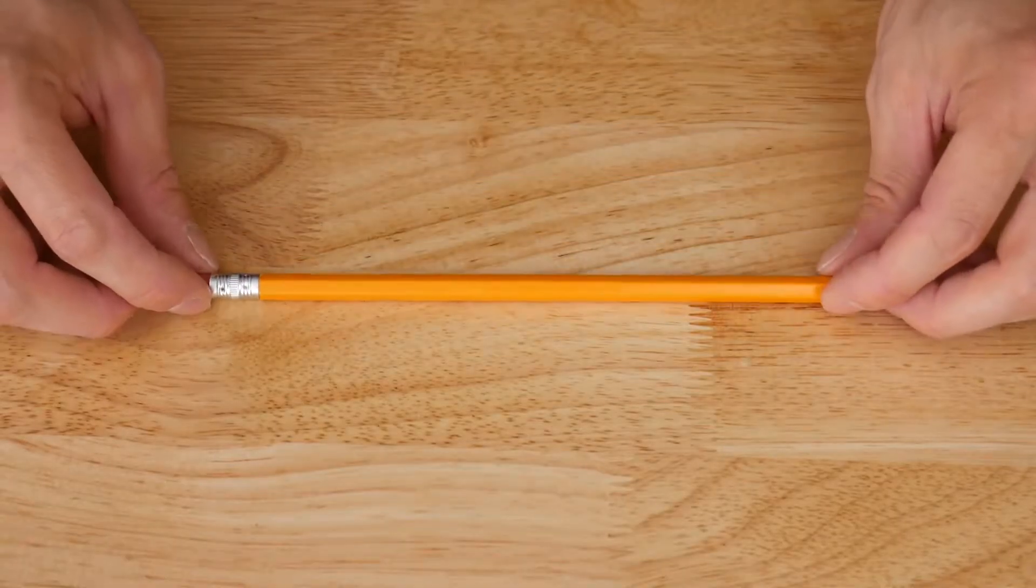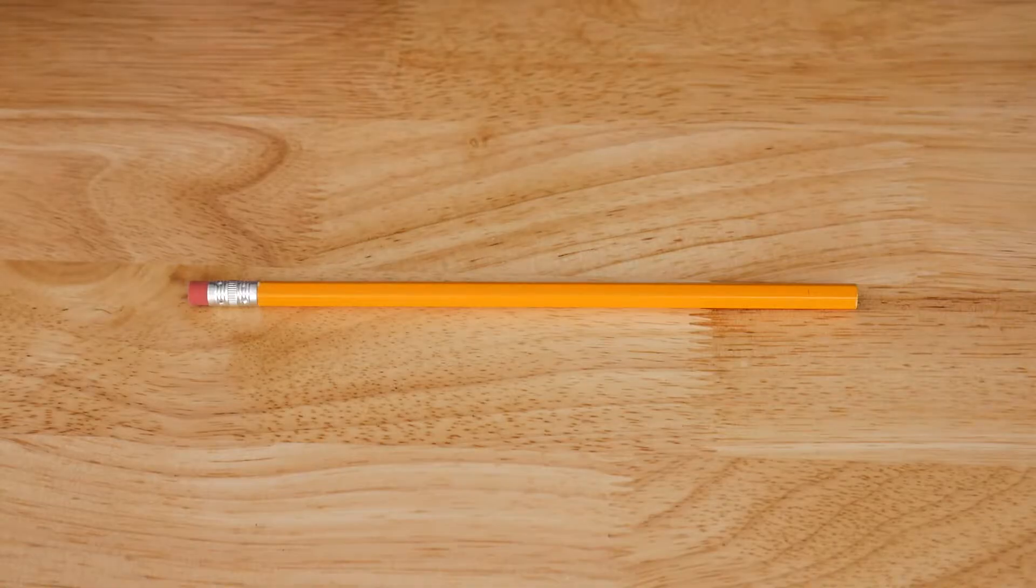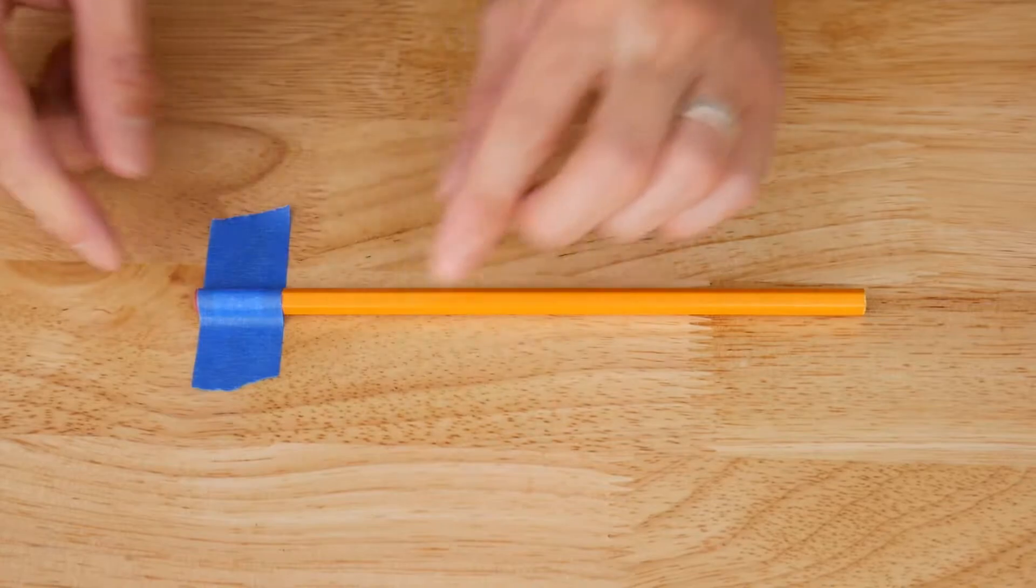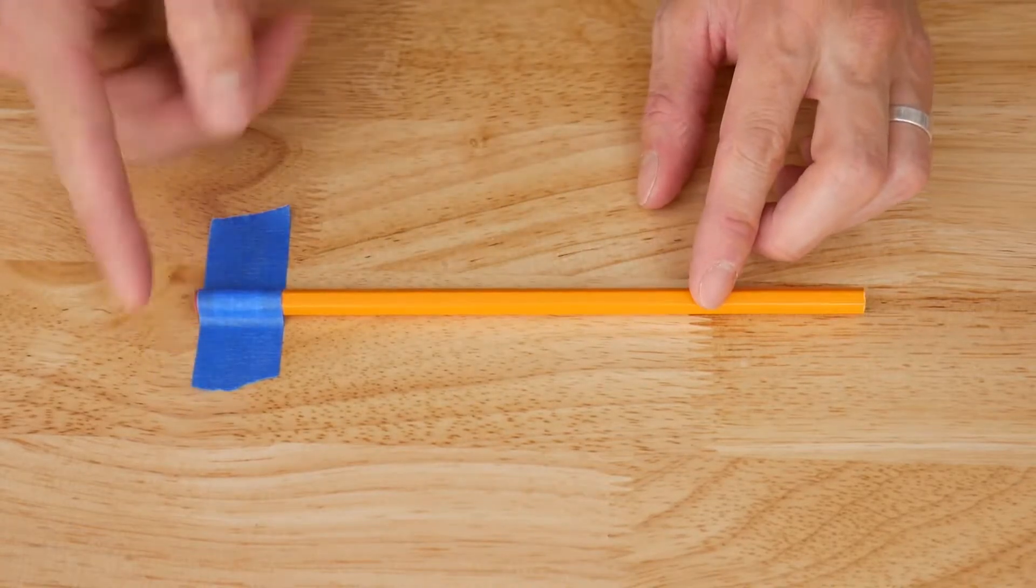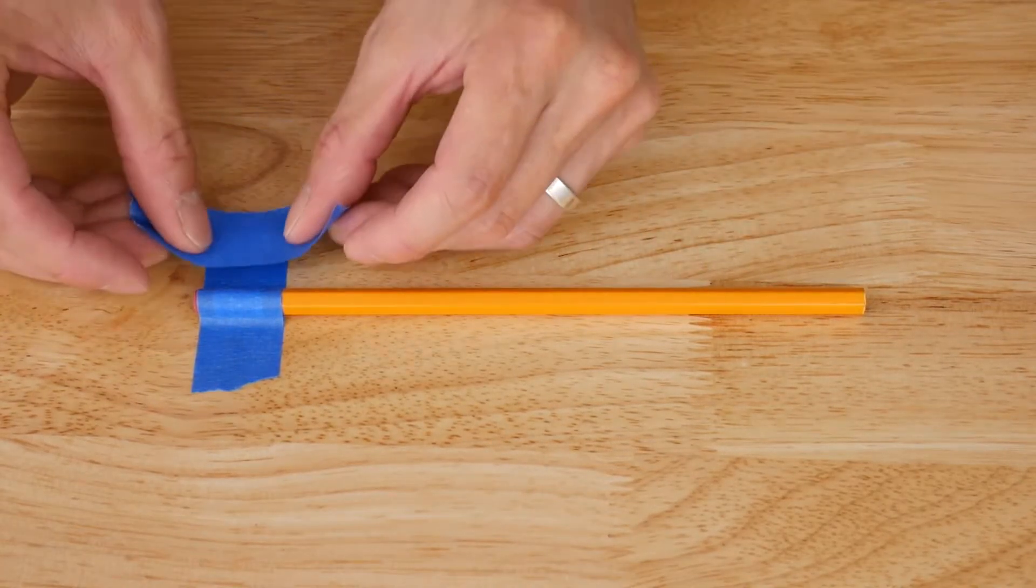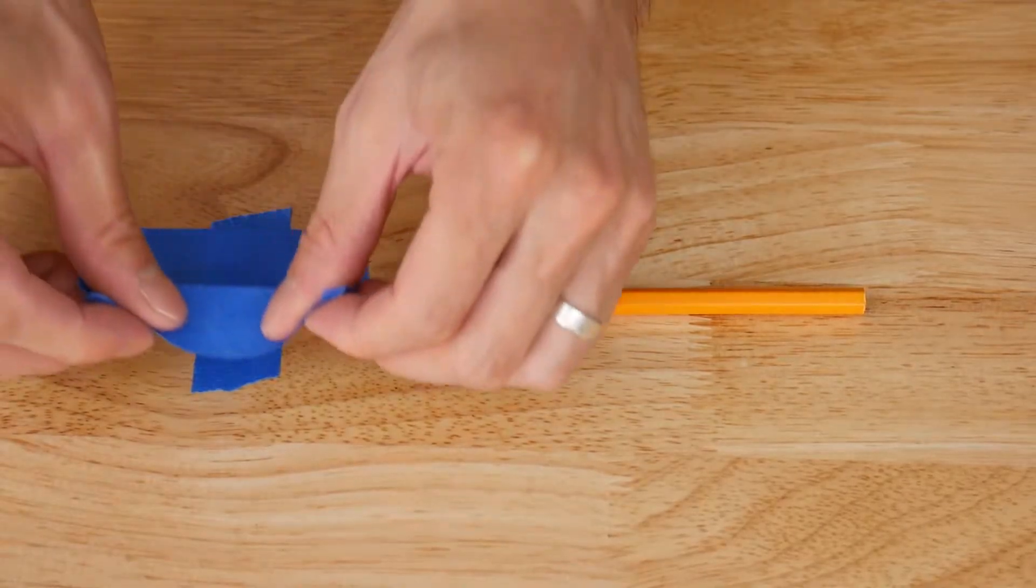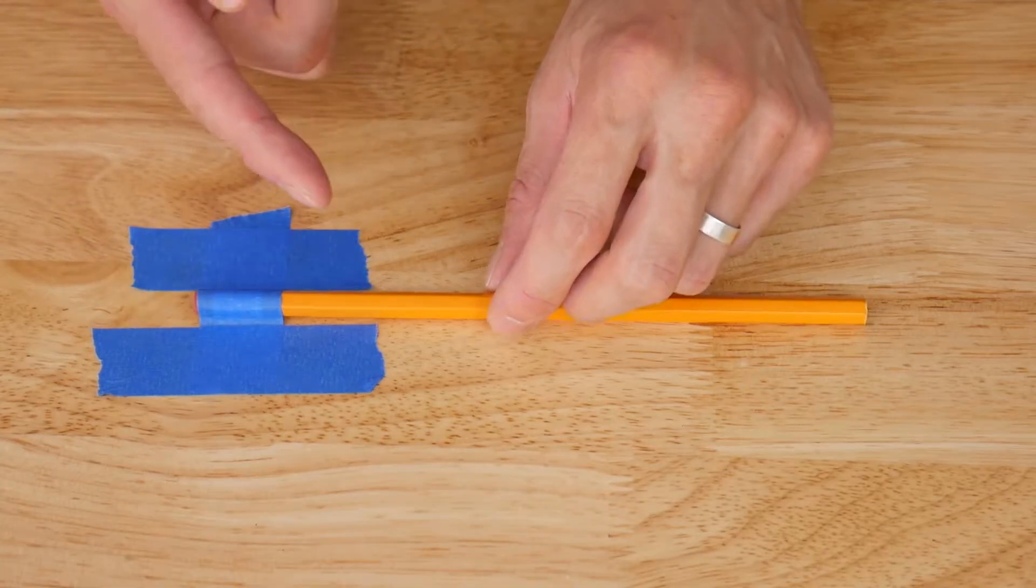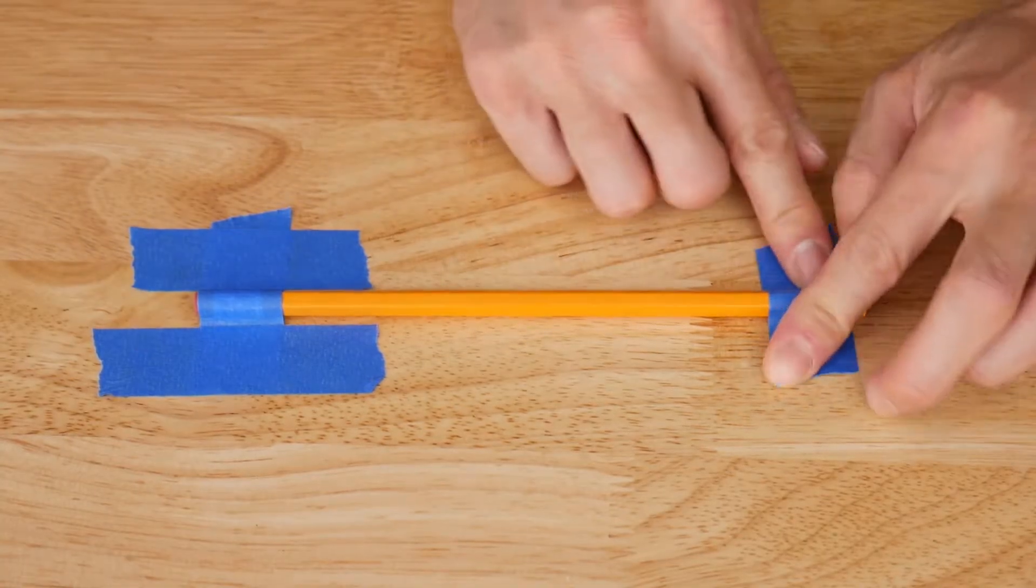To set up the launcher, all you need to do is place a number two pencil on the floor and then put a piece of tape across the eraser. The ends of the tape line up with the very end of the pencil, and then put two more pieces of tape across the first one like this. These cross pieces of tape are going to prevent this first piece from peeling up. Then finally tape the other end as well.